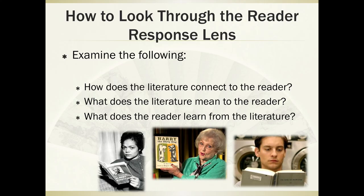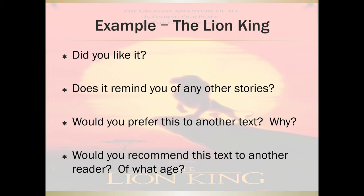To use the reader response lens, we just read and ask ourselves: do I like it or not, do I care for this? We'd love for you to love every text we give you, but we know you're not always going to — there are all kinds of factors that encourage or discourage your enjoyment. That's you looking through your own reader response lens. For the Lion King: did you like it? Does it remind you of any other stories? Do you prefer it to Cinderella, and why? Would you recommend it to another person, and for what age? Would you watch or read it again? Anything that's very personal in orientation is going to be reader response lens focus.